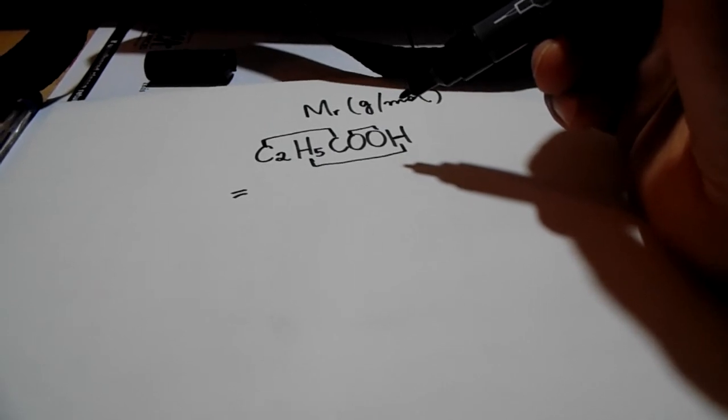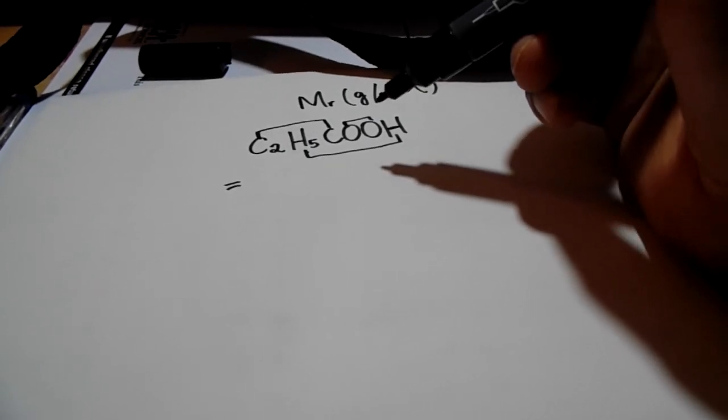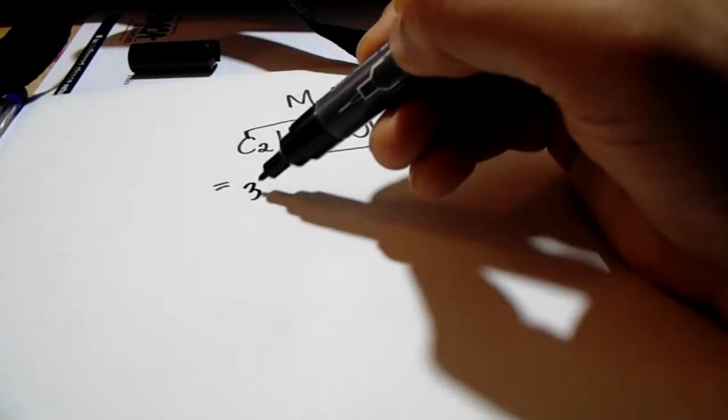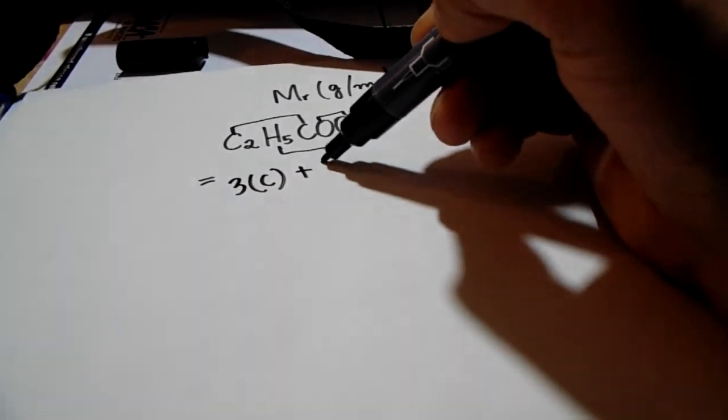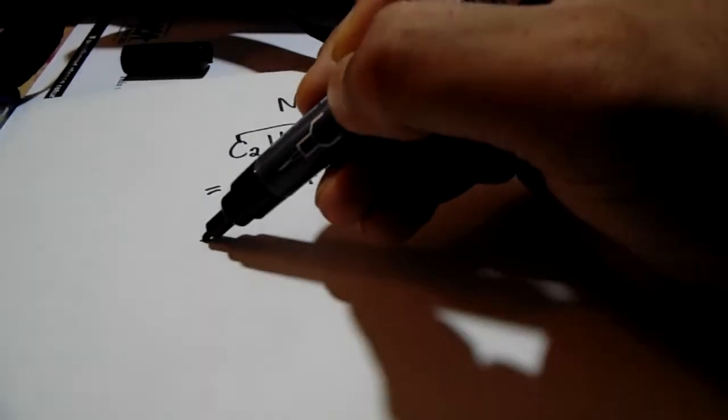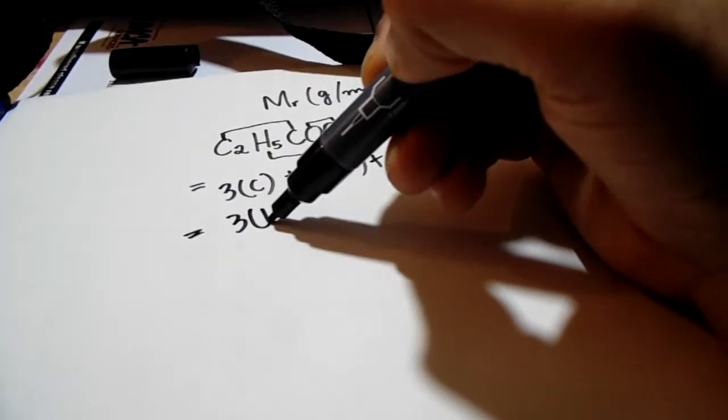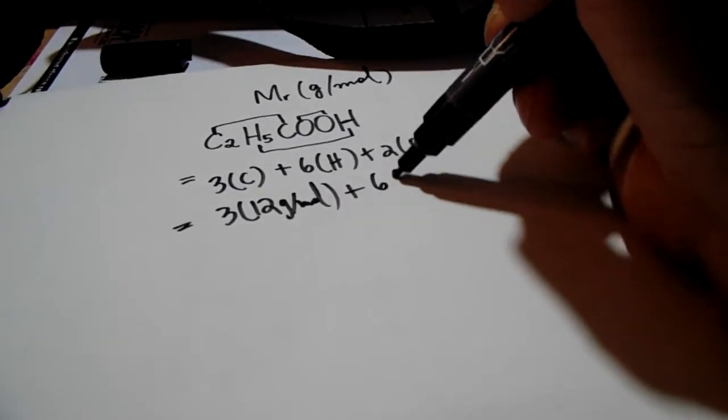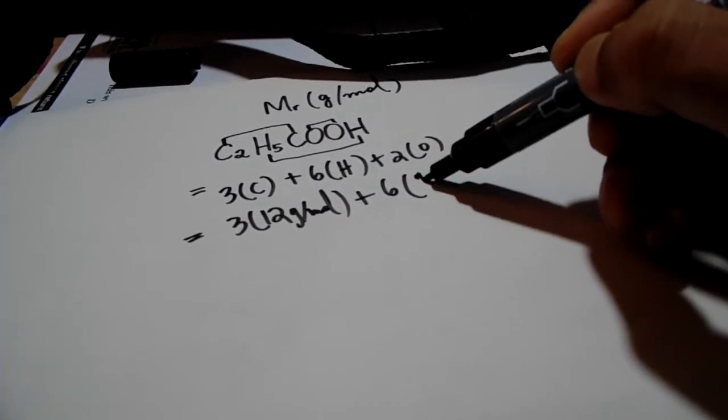So we'll take three carbon atoms plus six hydrogen atoms and two oxygen atoms, and we'll multiply three by 12 grams per mole, six by one gram per mole,